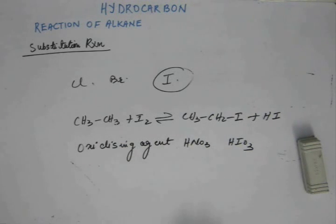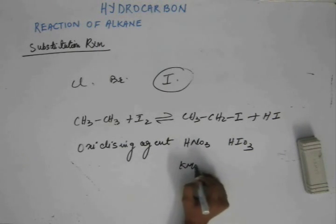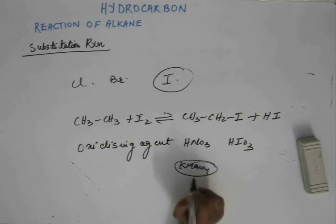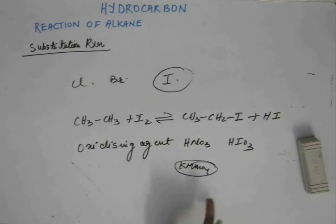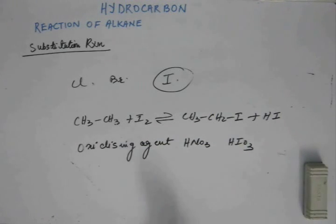Then that HI is not there so the reaction cannot come backward. These are the two common oxidizing agents that we have to keep in mind. There are others as well, but the problem with others is they are very strong oxidizing agents like KMnO₄ which can show other reactions. Generally here we will be taking nitric acid and iodic acid.